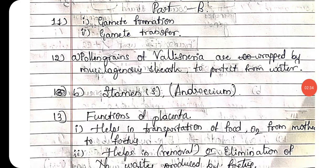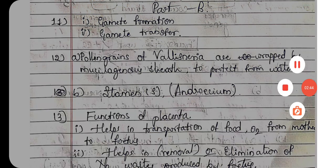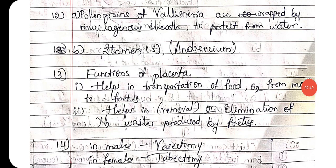Under the two-mark questions, the first one: name two pre-fertilization events. They are: first, gamete formation, and second, gamete transfer. These two are the pre-fertilization events. Twelfth one: how do the pollen grains of Vallisneria protect themselves?